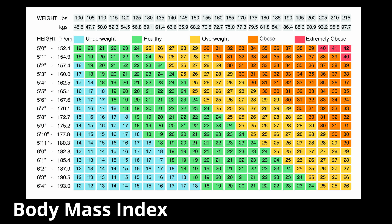A popular way of recording our weight is through the BMI scale. BMI stands for body mass index, and this is where we compare our height to our weight in a chart as shown here. We get a score and an overall description such as underweight, healthy, overweight, obese, or extremely obese.